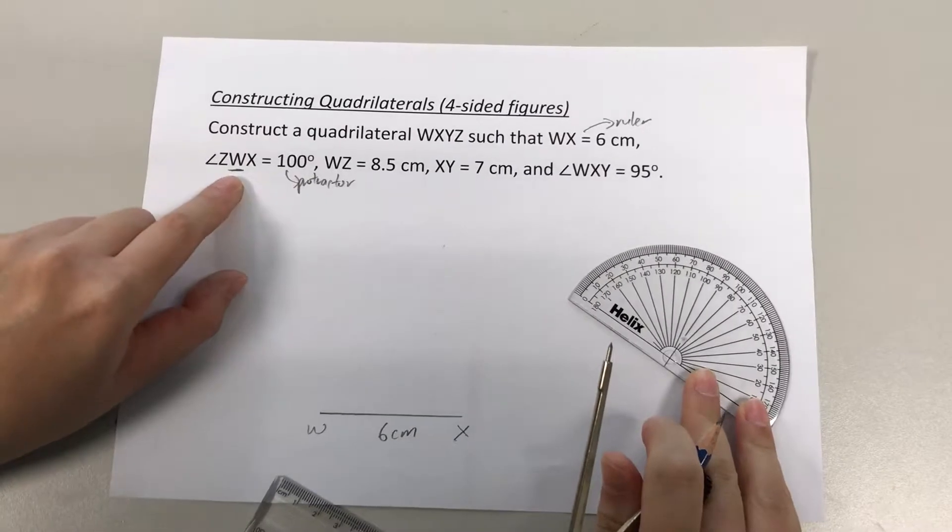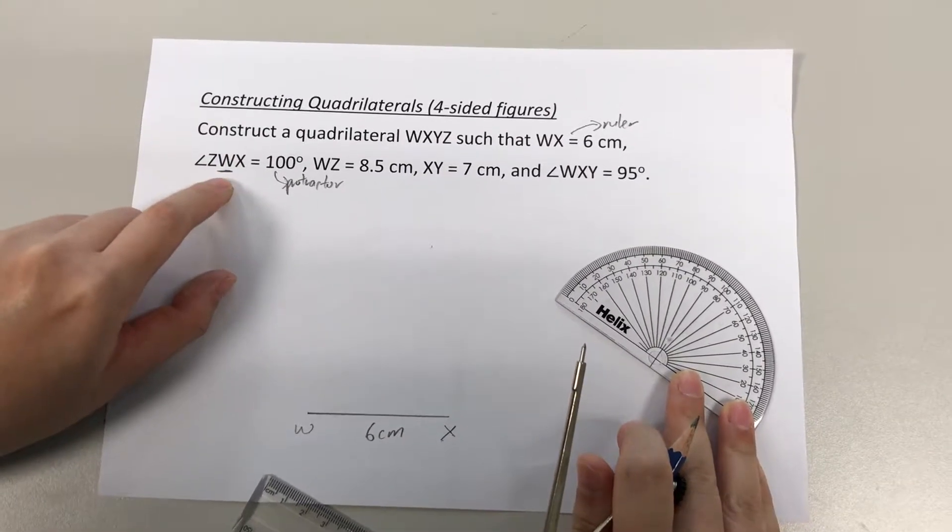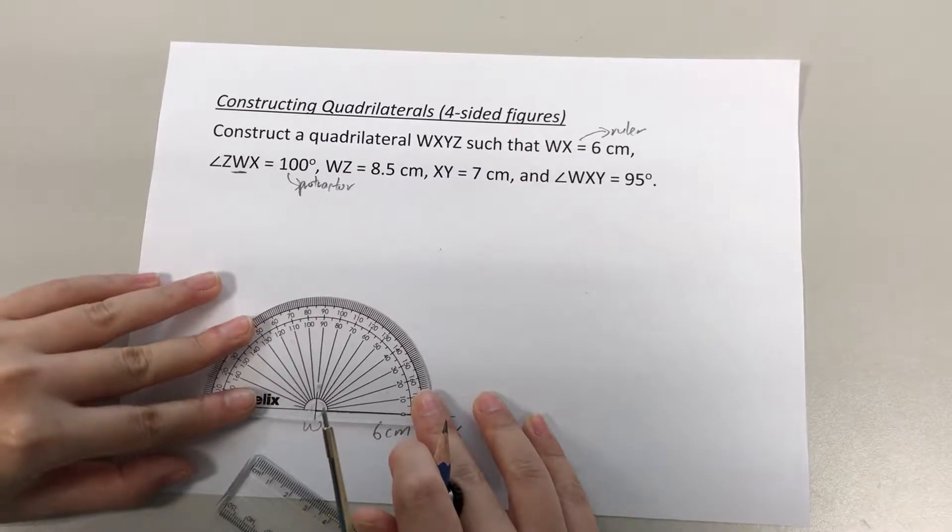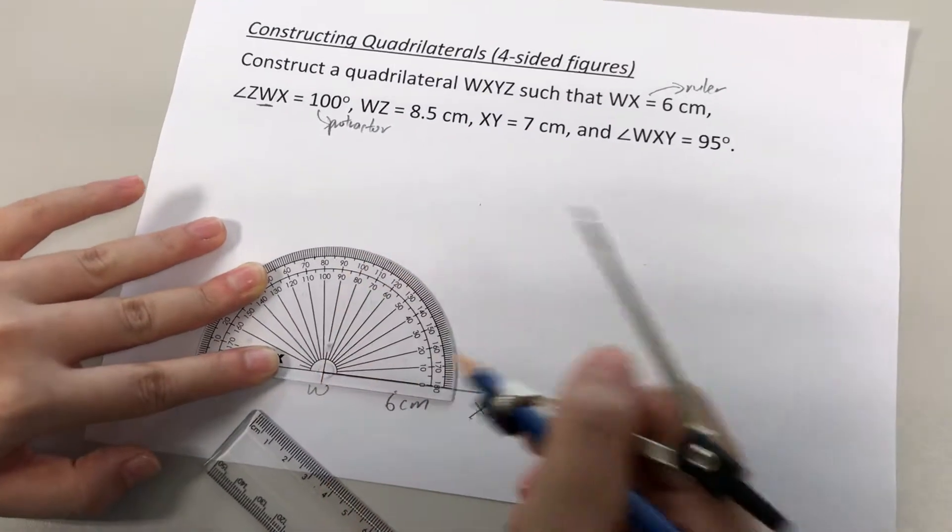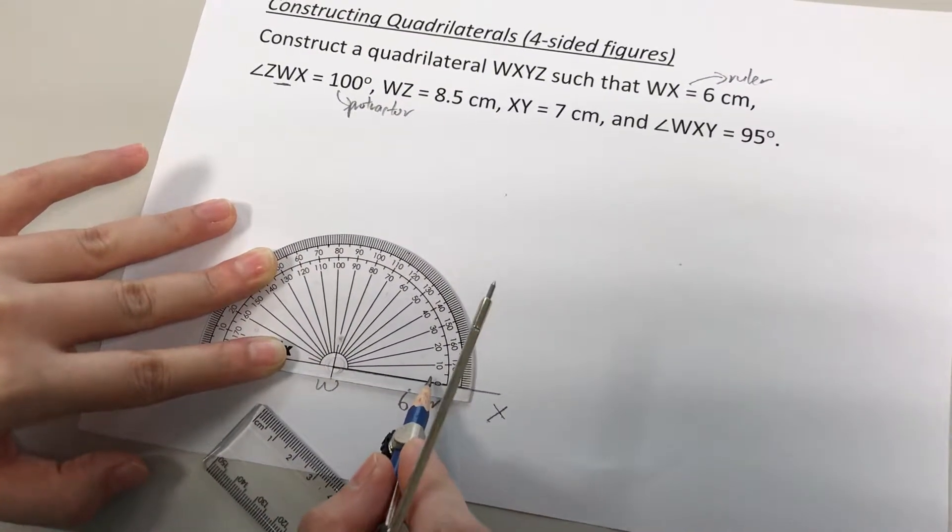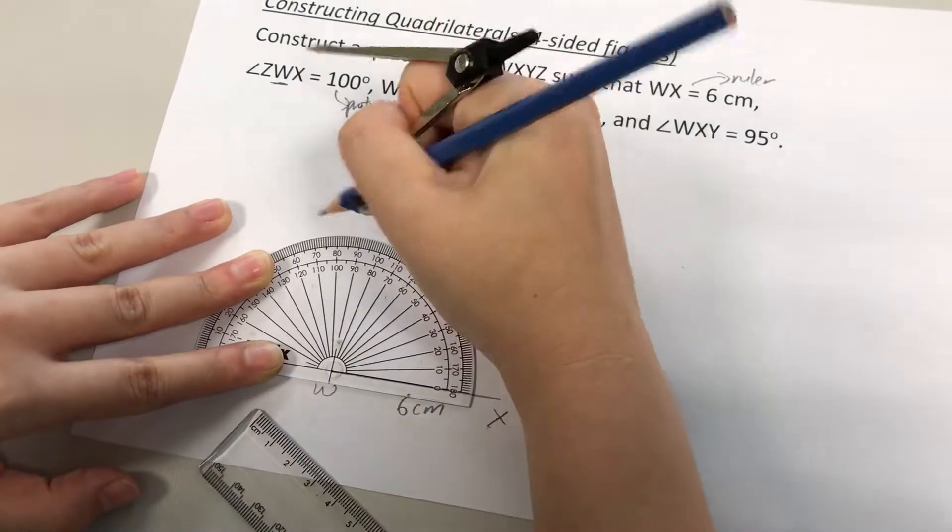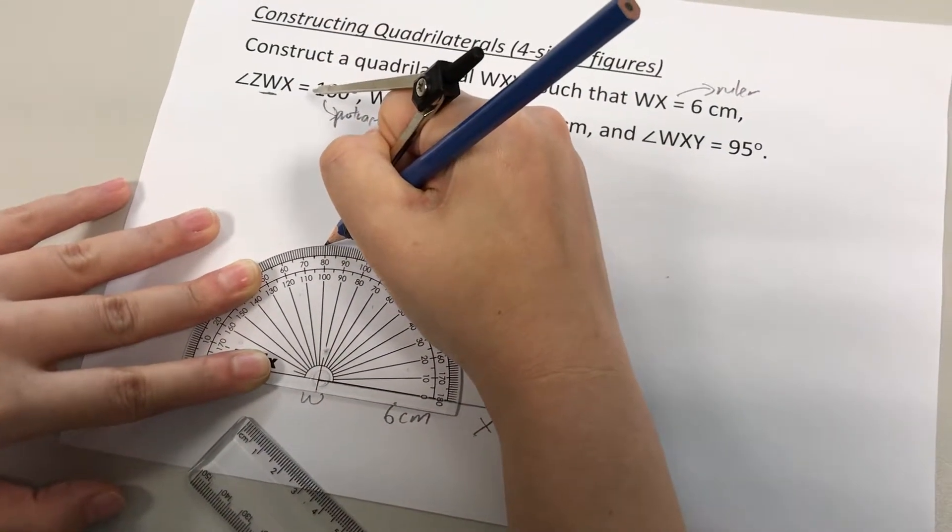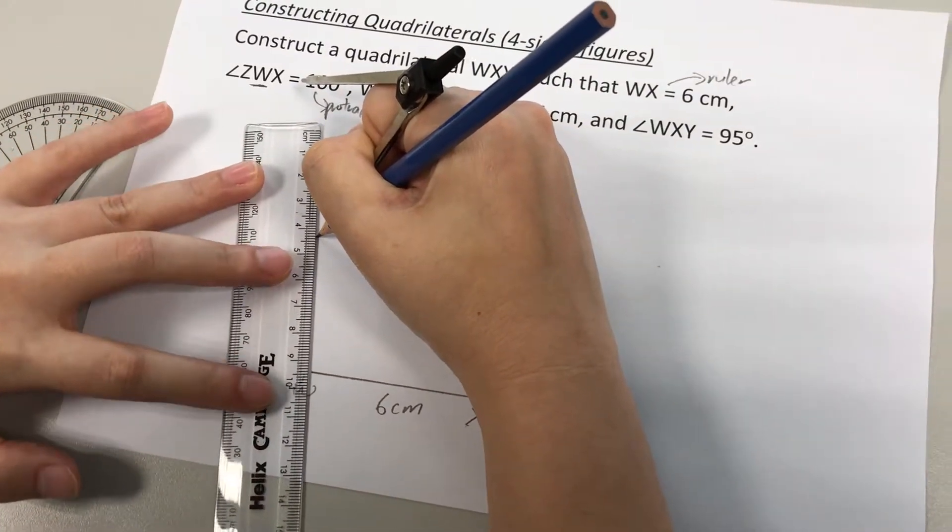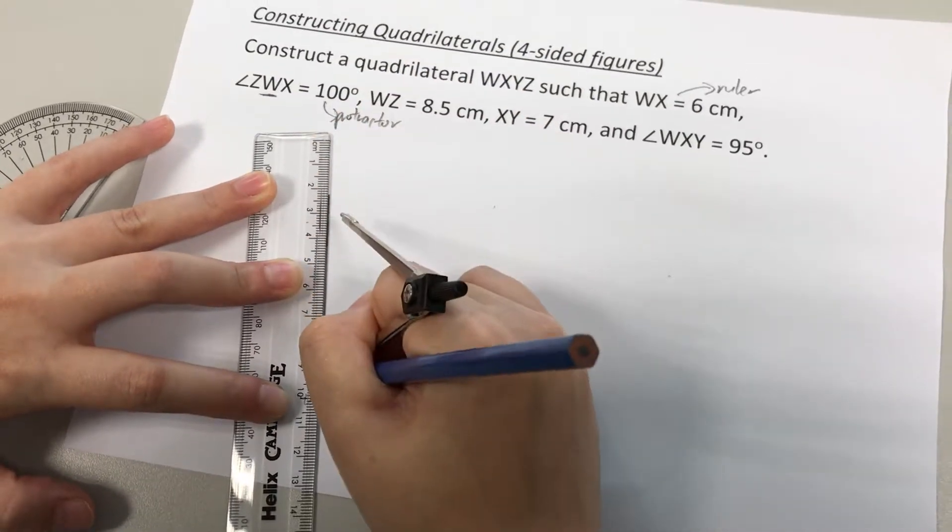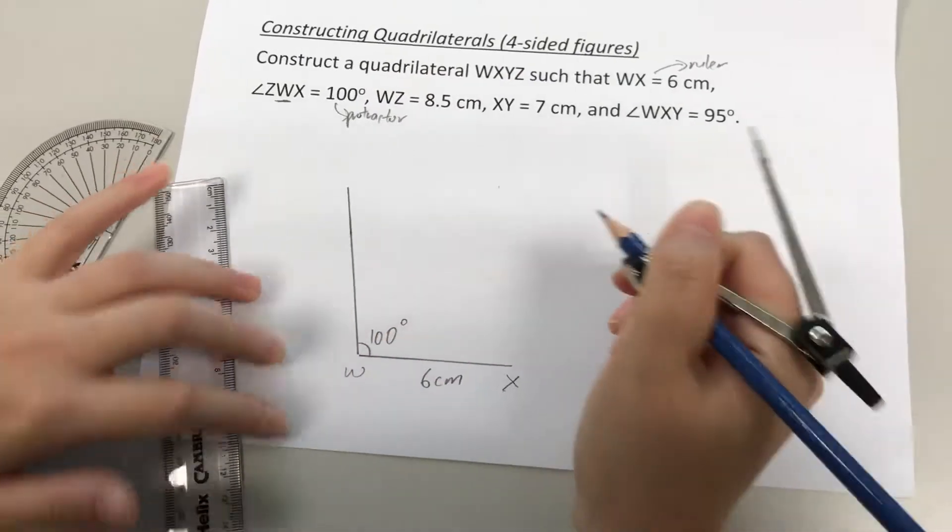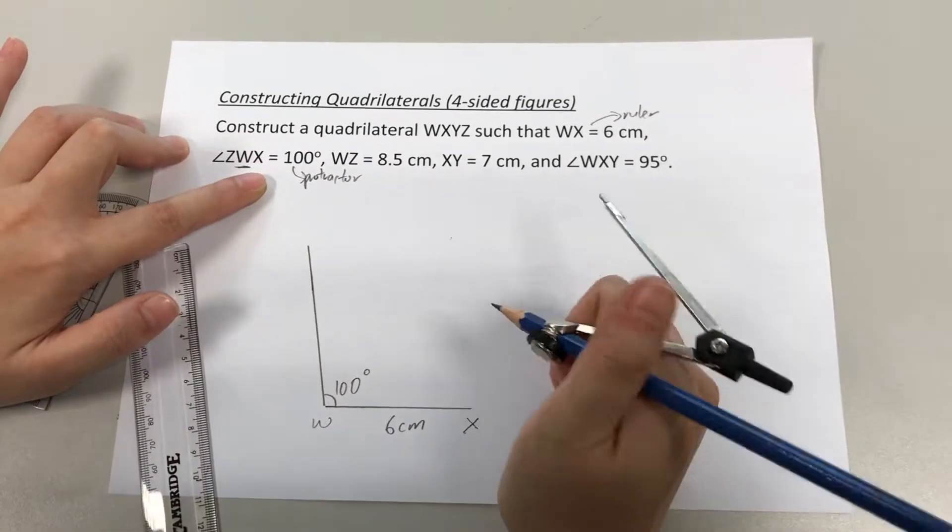So next step, using a protractor. This is the angle at point W, so I'm going to place my protractor at W. Alright, like this. Make sure you read the correct set of numbers. Read the set of numbers where this line points towards 0, so I'm going to follow only the inner set of numbers. 100 degrees, so this is where it is. I'm going to use my ruler to join this angle point to point W, and that is how I'll have my 100 degrees. Okay, so I've done my second information.